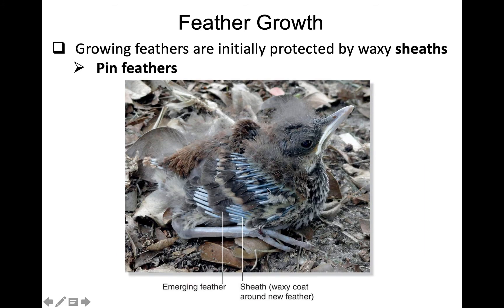As the feather grows it emerges from wax-like sheaths, and at this point they're called pin feathers — highly vascularized. If you're handling birds that are molting, whether nestlings or molting adults, it's important not to damage those. If you damage one and it starts bleeding, you should pull that feather out to allow clotting to occur, because leaving it risks continued agitation and substantial blood loss.